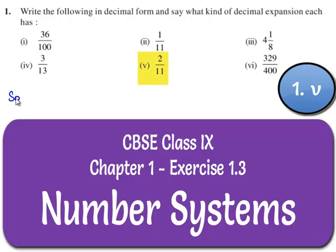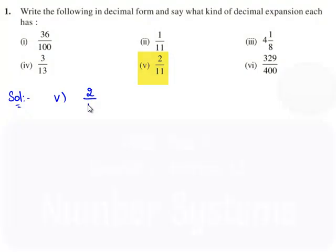Now let's move on to the fifth part. We need to find the decimal expansion for 2/11. Let's divide 2 by 11. 11 does not go into 2, so we take a 0.